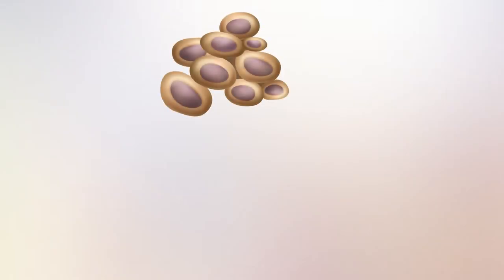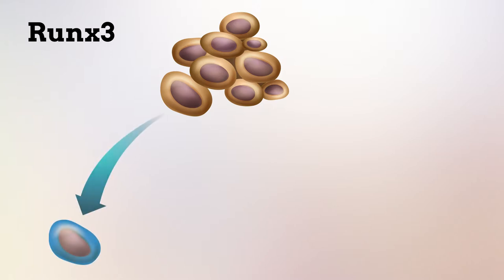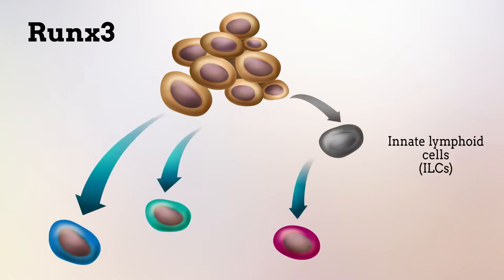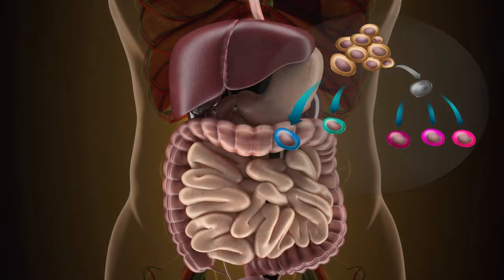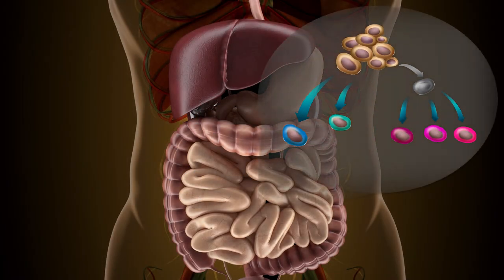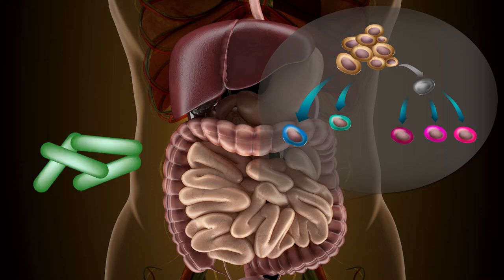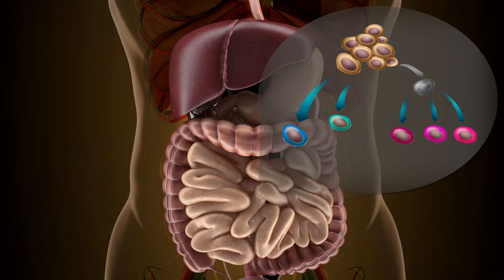In a recent study, researchers have identified RUNX3 as a protein that drives cell differentiation into specific types of innate lymphoid cells, or ILCs, that reside in the gut. These cells play important roles during normal immune responses to infection and in inflammatory conditions such as colitis, making it critical to understand more about how they develop.